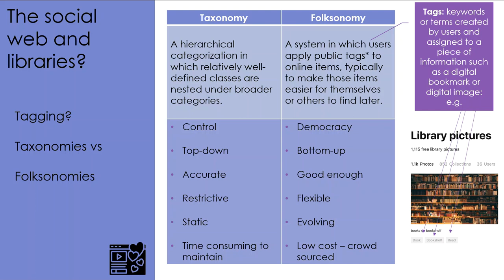A folksonomy is a system in which users apply tags they've generated to online items, typically to make those items easier for themselves or others to find later. Tags are keywords or terms that users have created and assigned to a piece of digital information. For example, this photograph of a bookshelf uploaded to Unsplash — a collection of images in the public domain — has been given the tags 'book,' 'bookshelf,' and 'read.' So when anyone searches for an image associated with those terms, this image will be returned as one of the results.